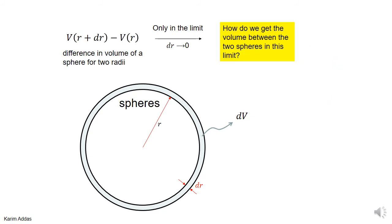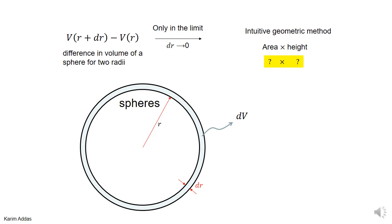The same approach applies to two spheres. If you have a sphere of radius r and another of radius r plus dr, how do you get the volume between them in the limit when dr goes to zero? Using the geometric approach, the volume is the surface area of the sphere times the height. The surface area of a sphere is 4πr² and the height is dr, so the volume is 4πr²·dr.